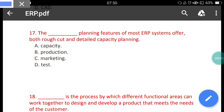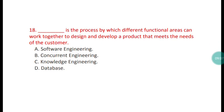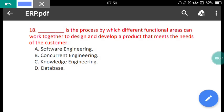Question 18: What is the process by which different functional areas can work together to design and develop a product that meets the needs of customers? The correct answer is option B — concurrent engineering. Concurrent engineering involves different functional area teams working together to meet customer needs in product development.